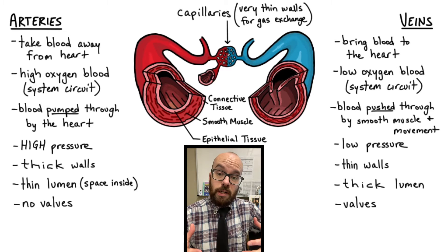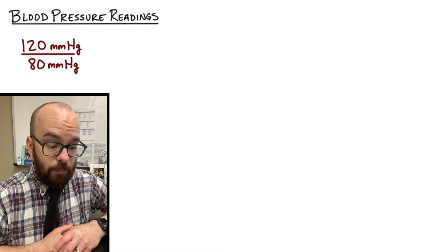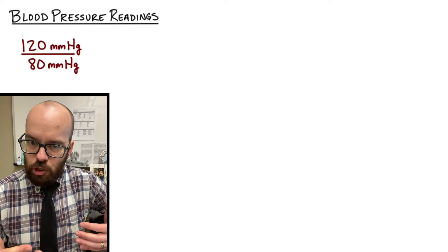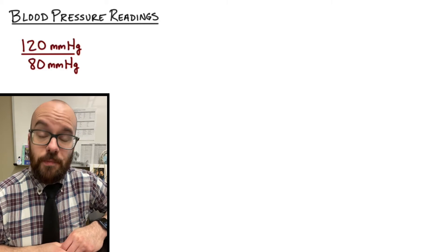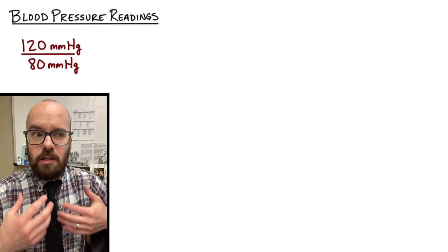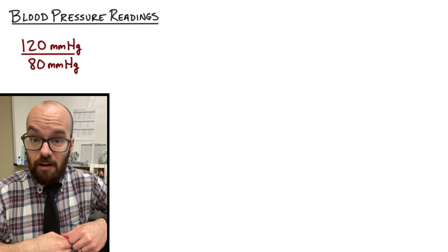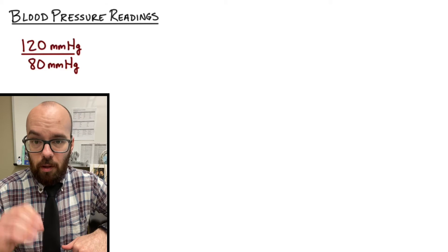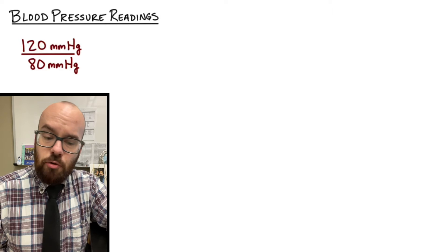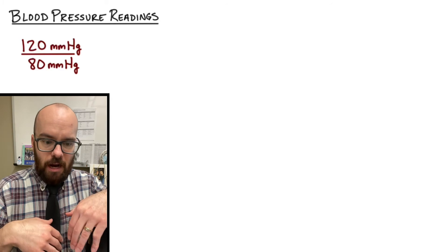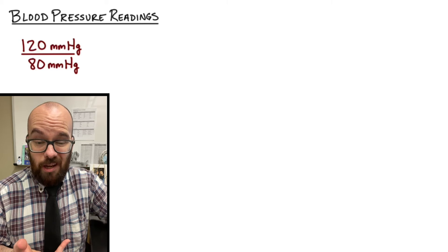Now let's look at blood pressure readings and what they mean. A typical example is 120 over 80, or 120 mmHg over 80 mmHg. mmHg stands for millimeters of mercury — it's a unit of pressure tied back to mercury thermometers, but the main thing to know is that mmHg is the unit we use for blood pressure. There are two numbers written like a fraction, but it's not a fraction — these are two separate numbers that mean two separate things; they're not a ratio.